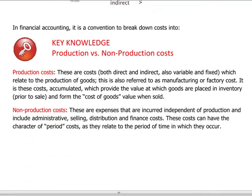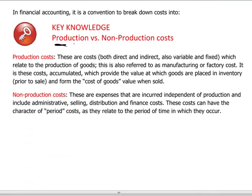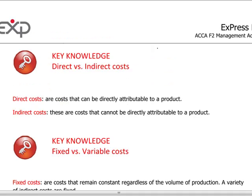Let's have a look at some of the ways in which we can organize our thinking about costs. Let's start with the distinction between production and non-production costs. Production costs are all costs connected to the production of goods — both direct and indirect — which means capturing production overhead costs as well. Non-production costs are the kinds of costs incurred after production has taken place and goods are put into inventory.